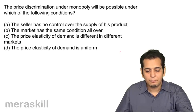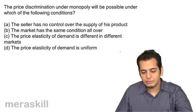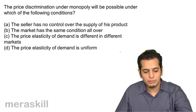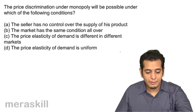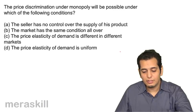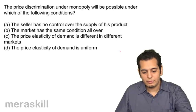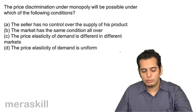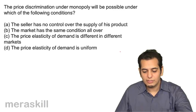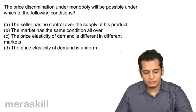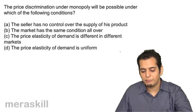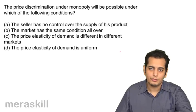Next, price discrimination under monopoly will be possible under which of the following conditions? a) the seller has no control over the supply of his product, b) the market has the same condition all over, c) the price elasticity of demand is different in different markets, d) the price elasticity of demand is uniform. The answer is c) the price elasticity of demand is different in different markets.